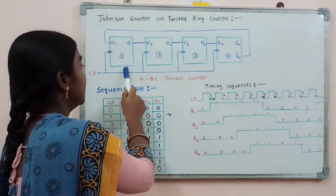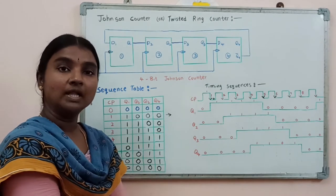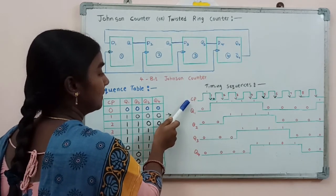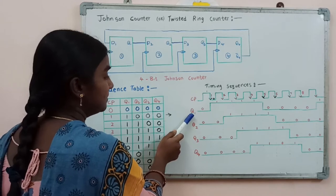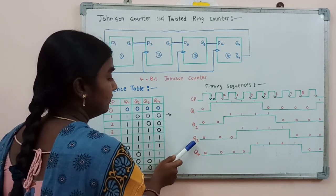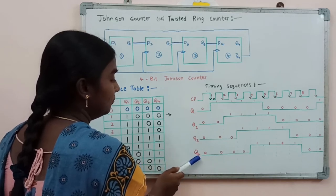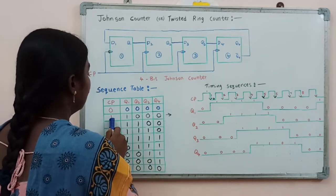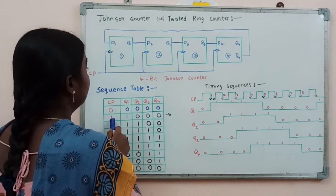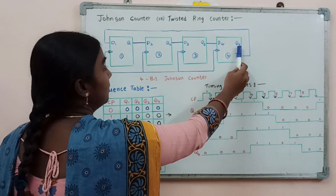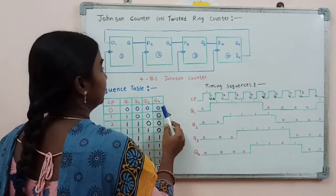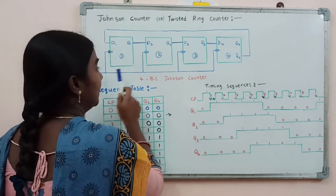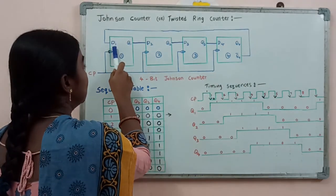This clock pulse is connected to all the flip-flops at a time, so all the flip-flops are going to be triggered at a time. This is the timing sequence of Q1 output of the first flip-flop, Q2 output of the second flip-flop, Q3 output of the third flip-flop, and Q4 output of the fourth flip-flop. Now we will see the sequence table. By applying the first clock pulse, before applying the clock pulse, the fourth flip-flop output Q4 is 0, so the complement of Q4 is going to be 1. By applying the clock pulse, this 1 is fed back to the input of the first flip-flop.